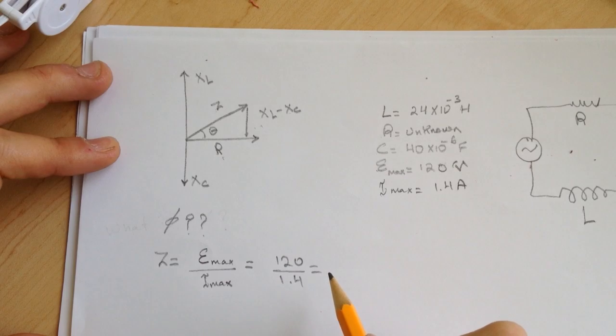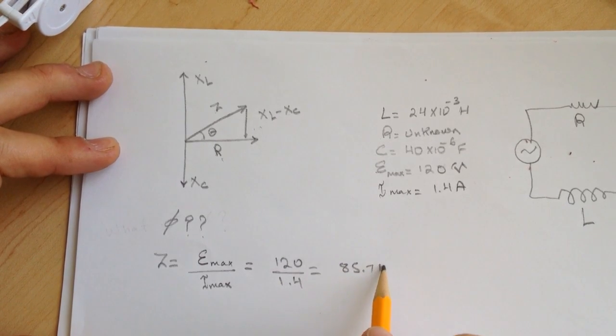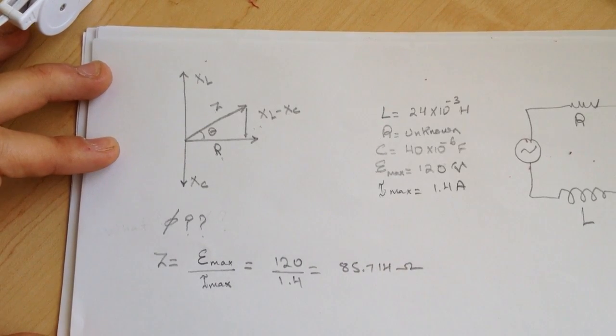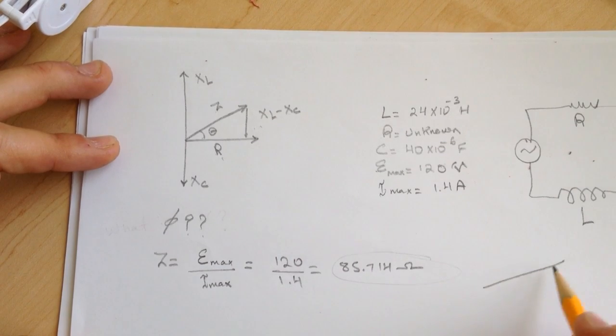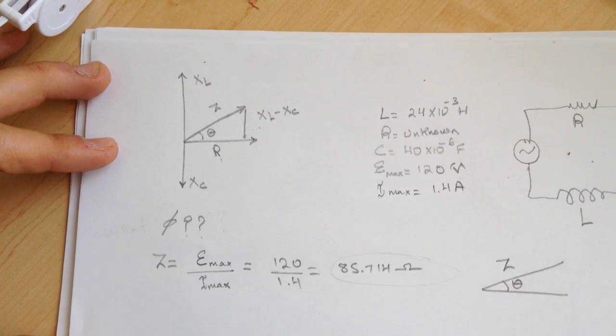We have this, so it's 120 over 1.4 ampere. And I got for this 85.714 ohm. This is the impedance, so this is the Z. See here.